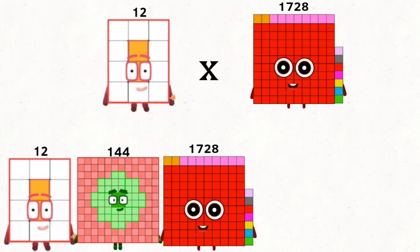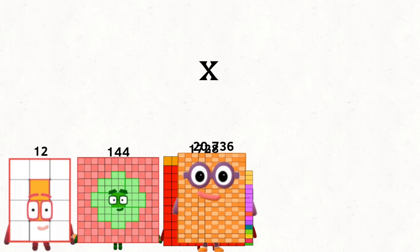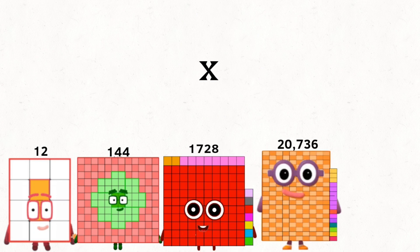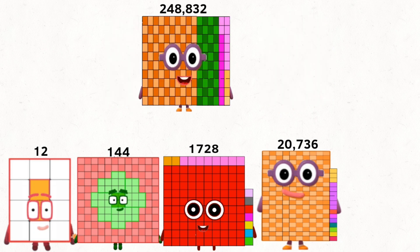12 times 1,728 equals 20,736. 12 times 20,736 equals 248,832.